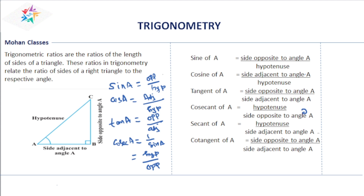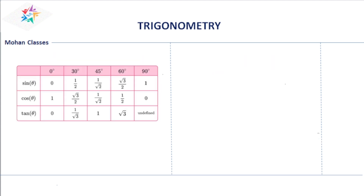Now let us do the trigonometric table. The trigonometric table gives us the values of sine 0, sine 30, sine 45, sine 60, and sine 90. To remember this table, start with 0, 1/4, 1/2, 3/4, and 1, then take the square root of each: square root of 0 is 0, square root of 1/4 is 1/2, square root of 1/2 is 1/√2.